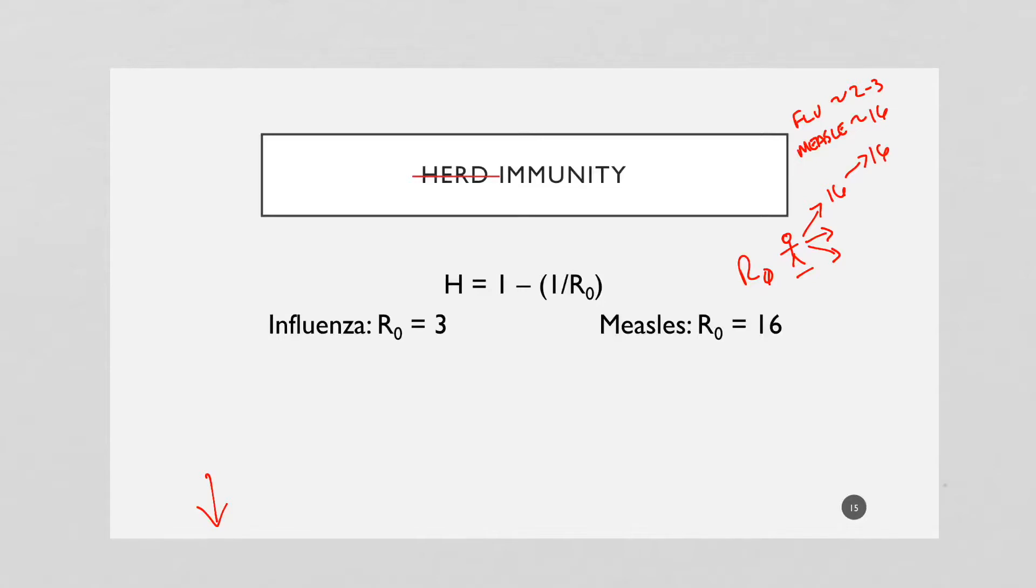You can see how after a period of time, the epidemic of measles will go from one person to 16 to 16 times 16, which is 16 squared. It'll just explode right away if no countermeasures are taken. So if we want to kick in herd immunity, we use this formula: Herd immunity equals 1 minus 1 over the basic reproductive number.